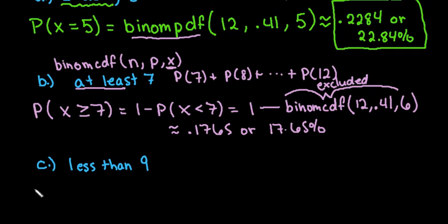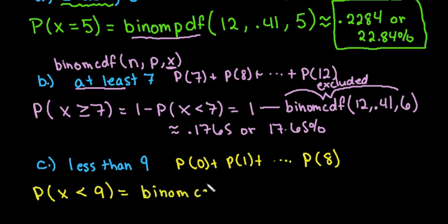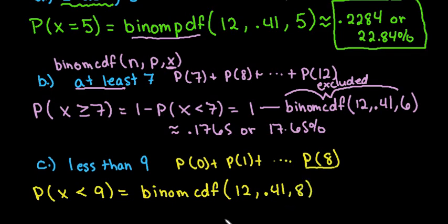Less than 9 is easier because we add P(0) + P(1) + ... + P(8) — and since zero is included, we don't need the 1 minus. We just use binomCDF directly and stop at the last whole value below 9, which is 8. So we enter 12 comma 0.41 comma 8.